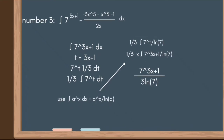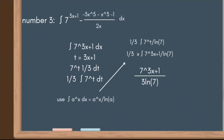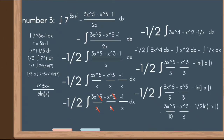We move 1/3 outside the integral, giving us 1/3 times the integral of 7ᵗdt. Using the formula: integral of aˣdx = aˣ/ln(a), we get 1/3 times 7ᵗ/ln(7). Substituting back t = 3x+1 and multiplying by 1/3, our answer for the first part is 7^(3x+1) / (3·ln(7)).